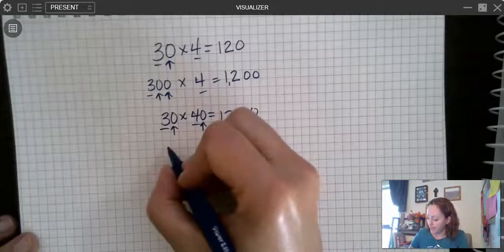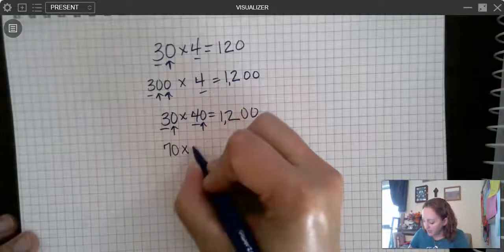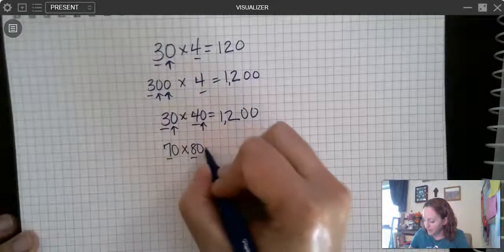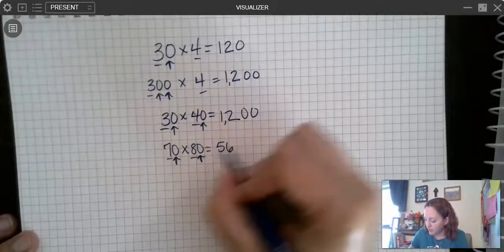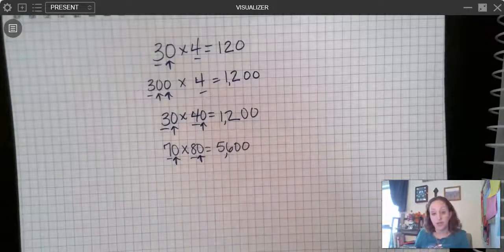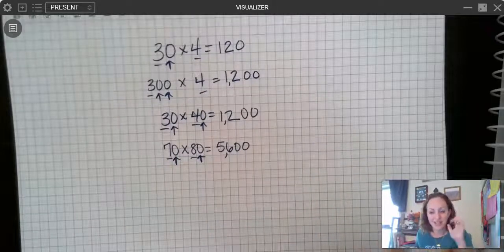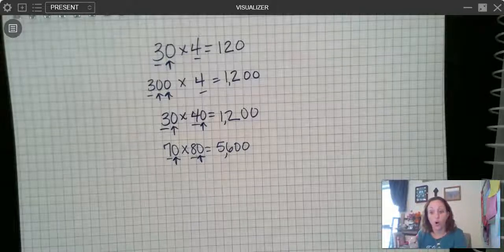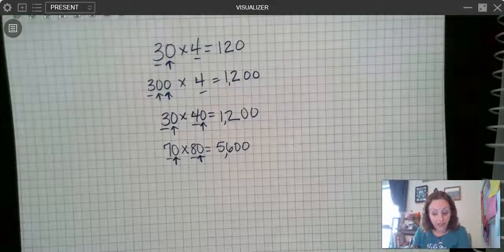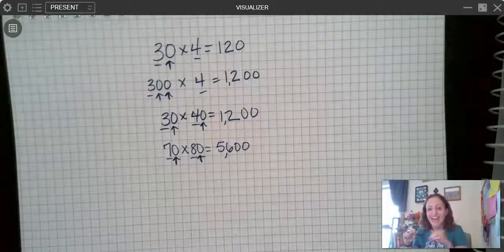Let's look at one more example of that. Let's say I have 70 times 80. I know 7 times 8 equals 56. Again I have two zeros so I add on two zeros. It's a pretty easy concept. You're just counting your zeros and adding on all the zeros from all of the factors. That's the numbers you're multiplying together at the end.